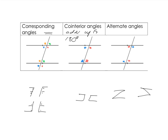And lastly, our alternate angles — we're looking for the Z. Look at the red ones: there's your Z, so this and this are equal. And then our back-to-front Z gives us the blue ones, which are equal. So our alternate angles are equal.